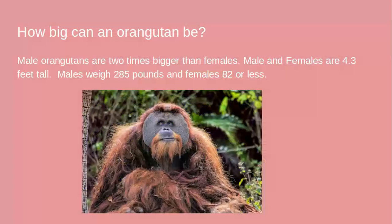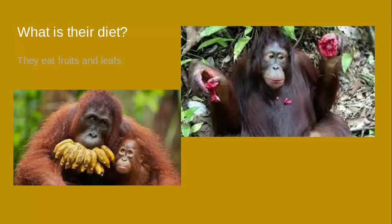How big can an orangutan be? Male orangutans are two times bigger than females. Both males and females are about 4.3 feet tall. Males weigh 285 pounds and females weigh 82 pounds or less. It's kind of weird because even though a male orangutan is four feet tall, it weighs 285 pounds — even a normal six-foot human wouldn't be close to that.